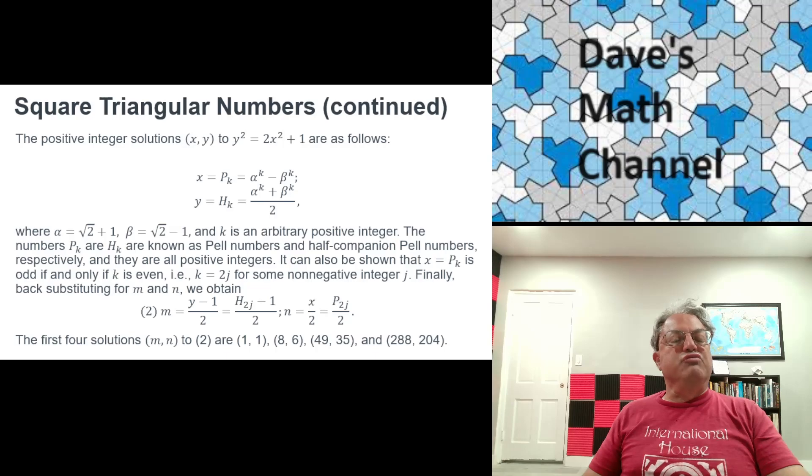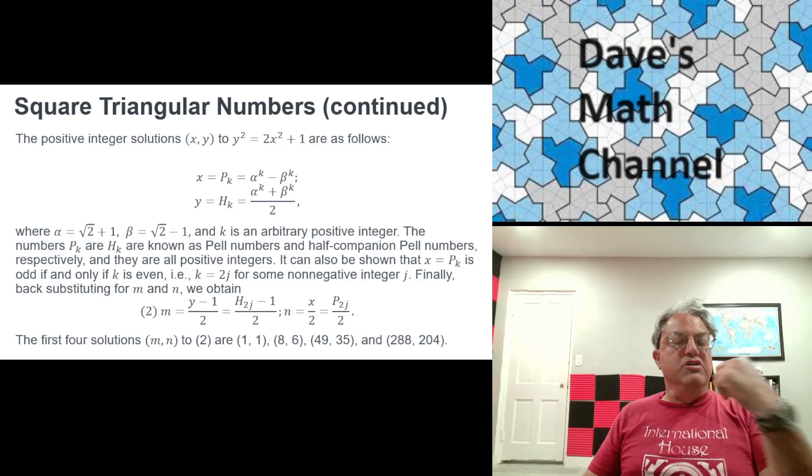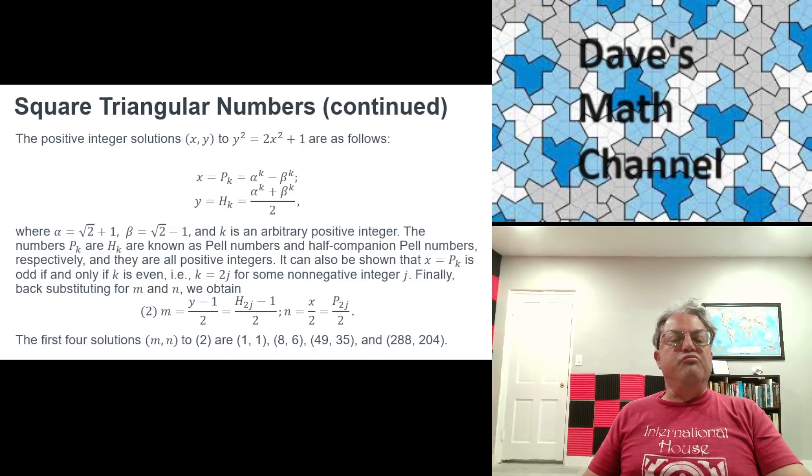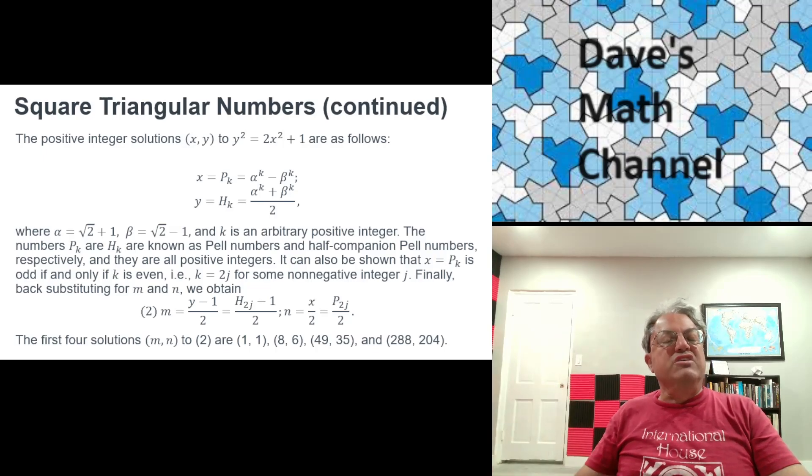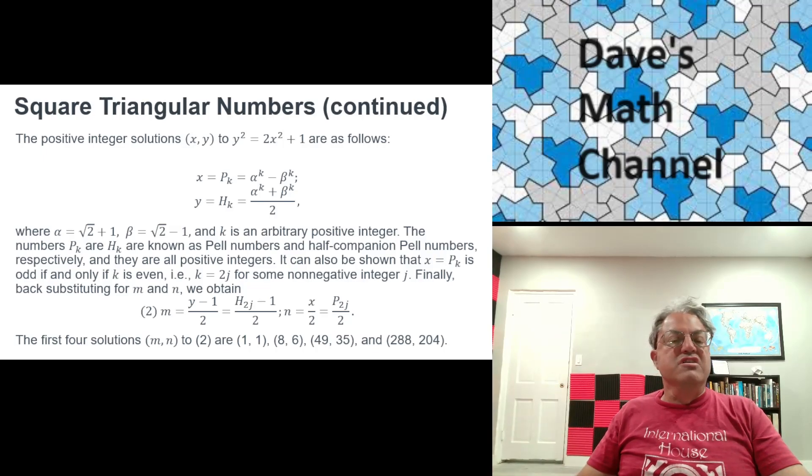But it's very well known how to solve Pell's equation for any value of n. And for n equals 2 in particular, this is the known solution. It turns out that x, if we want y squared equals 2x squared plus 1, where x and y are a pair of positive integers, then x has to be what's called a Pell number, pk, the kth Pell number, which has an equation for it: alpha k minus beta k, where alpha is square root of 2 plus 1 and beta is square root of 2 minus 1.